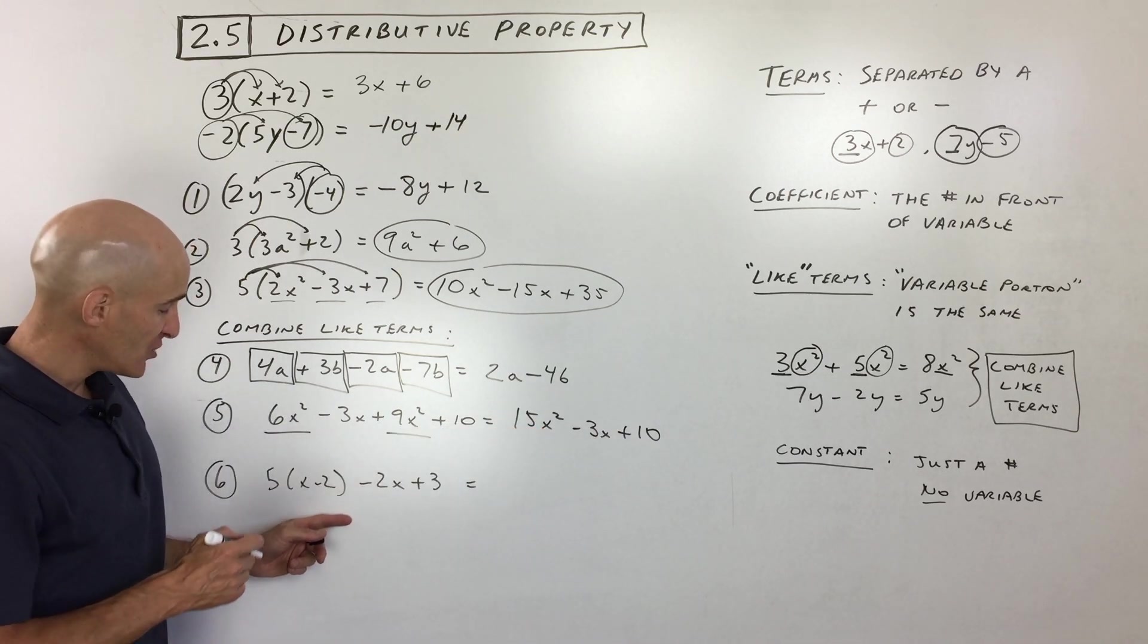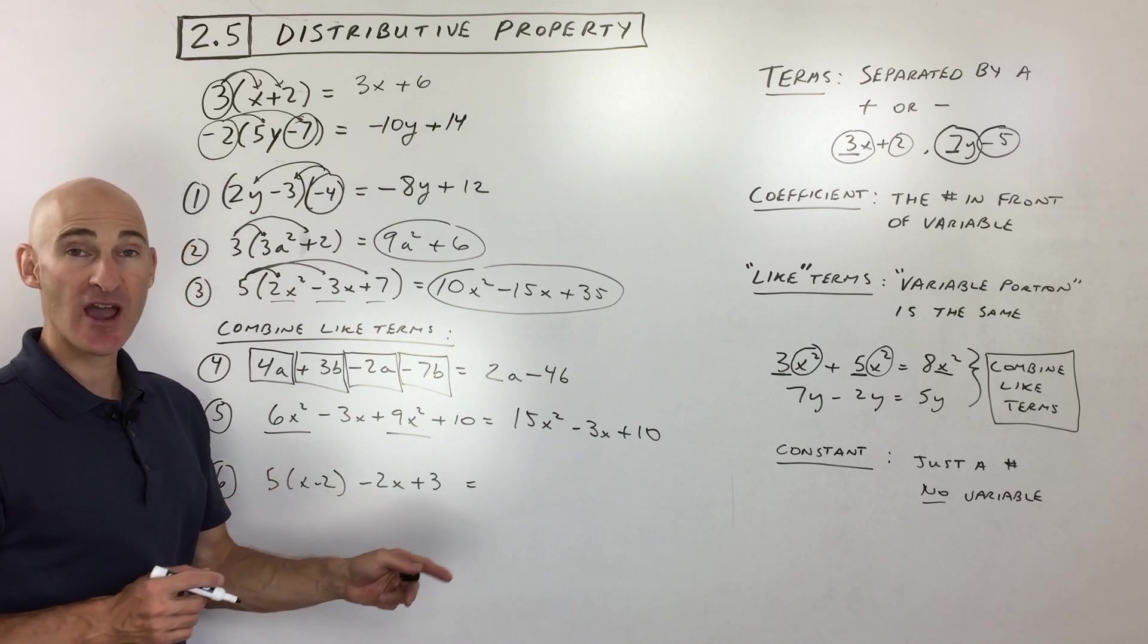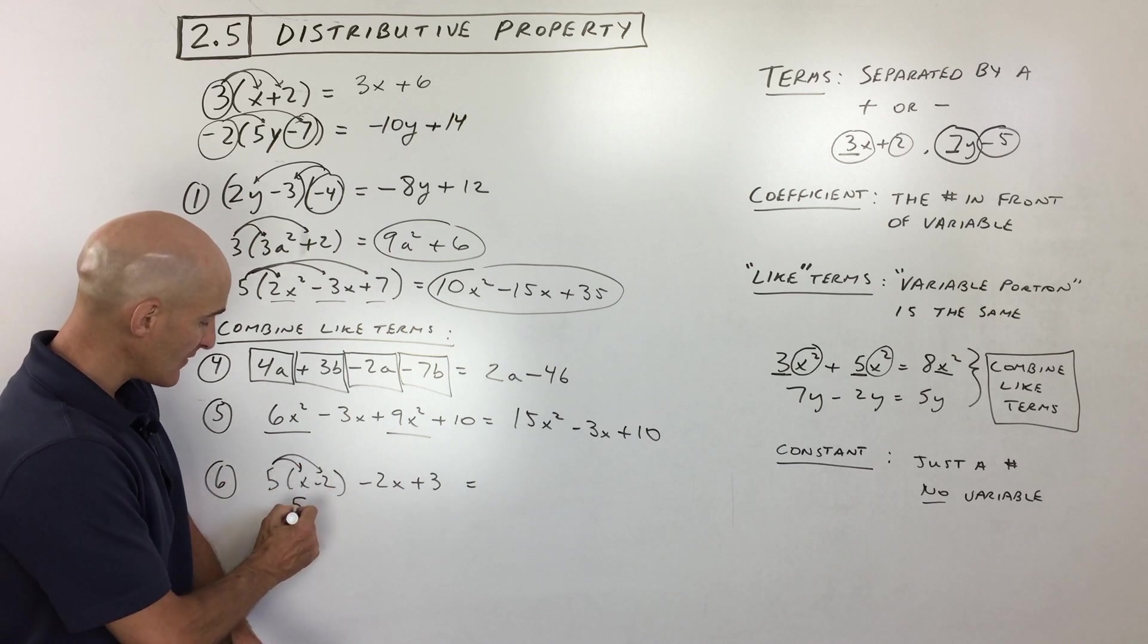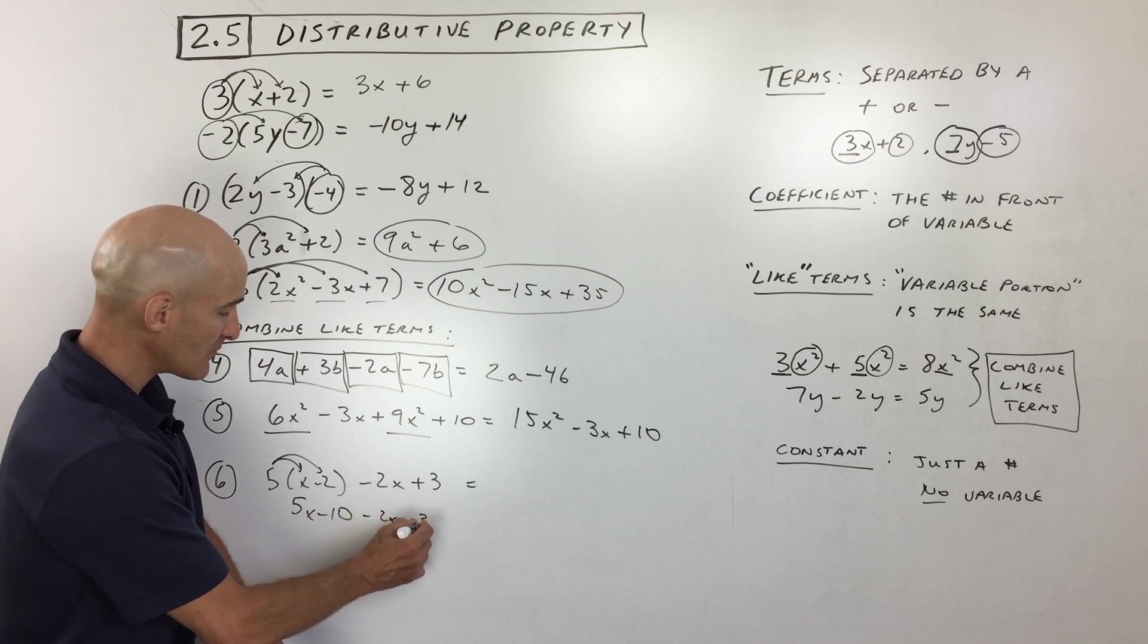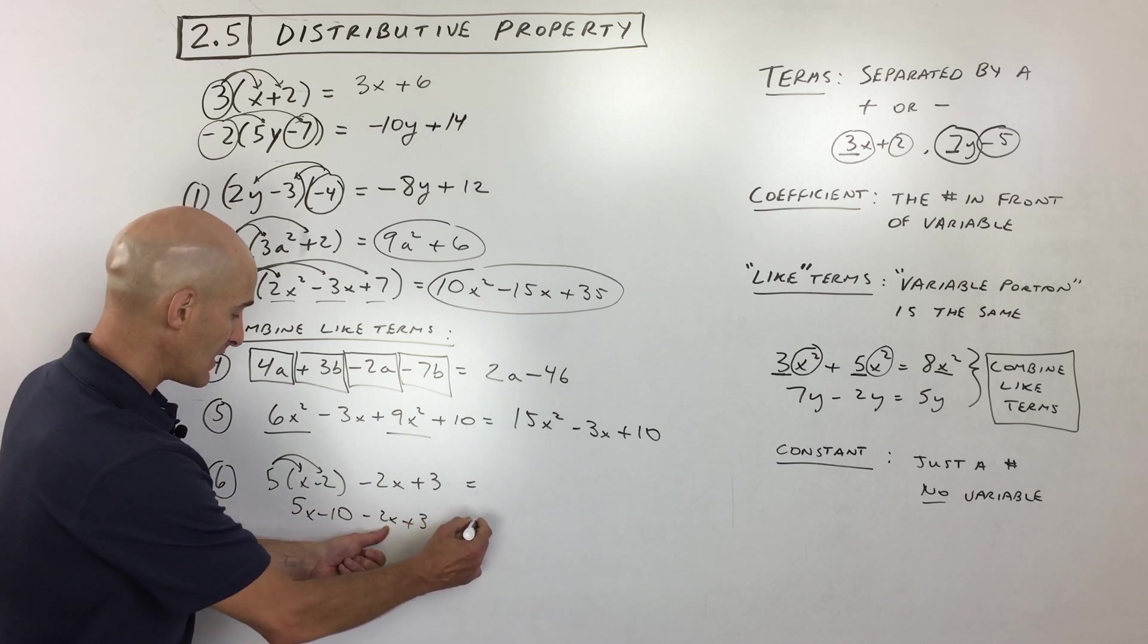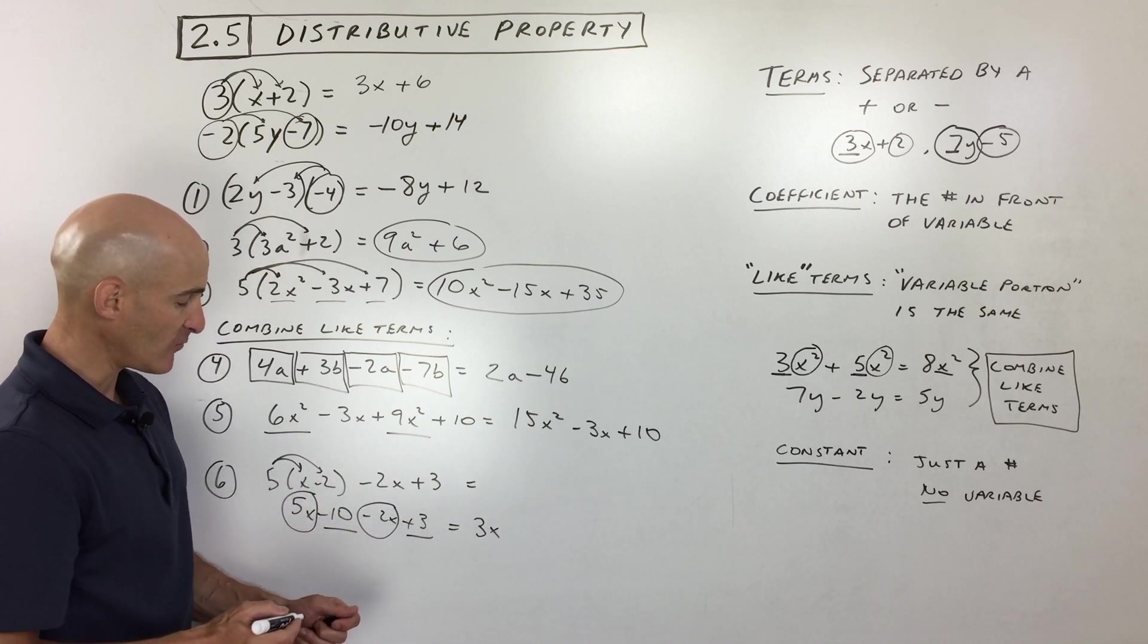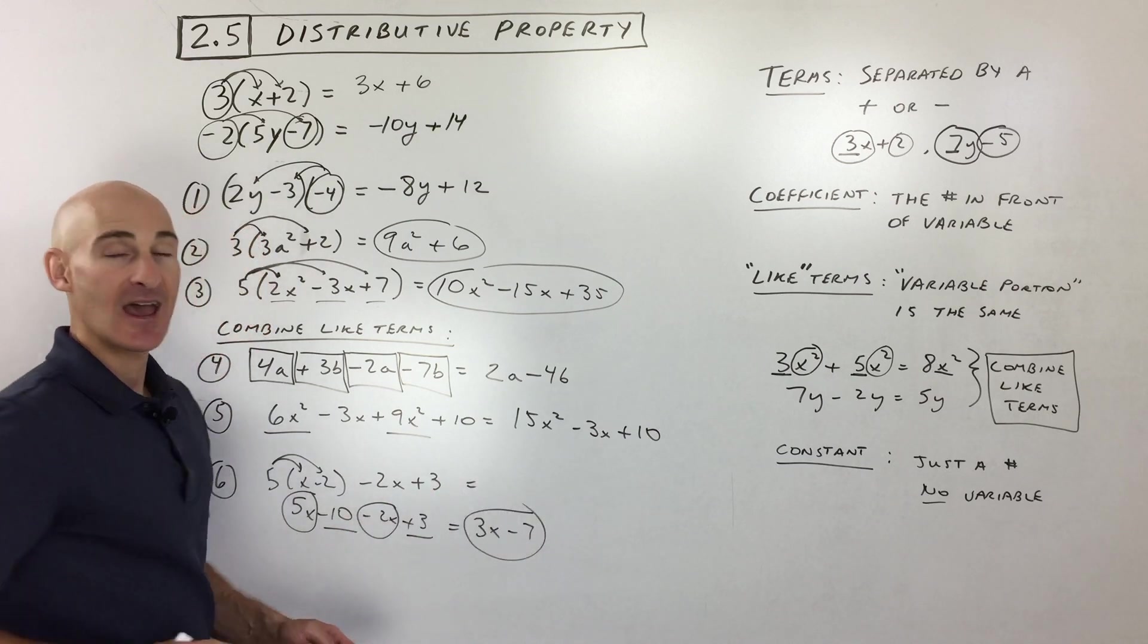Last example, we have to do the distributive property here. Because remember, multiplication comes before addition and subtraction. Remember our PEMDAS. So what I'm going to do is I'm just going to do this initial step. I'm going to distribute. So that gives us 5x minus 10 minus 2x plus 3. I'm just bringing these down. Now we want to combine like terms. So we've got 5x and negative 2x. That equals 3x, right? So negative 2x plus 5x. And then we've got the two numbers, negative 10 and positive 3. When we add those together, we get negative 7, or you can think of it as minus 7. And you've got it.